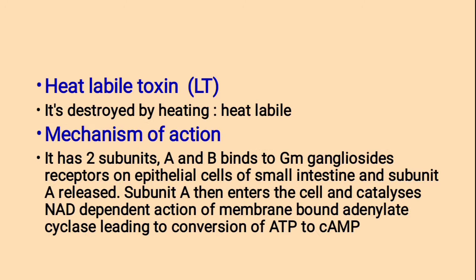Mechanism of action of heat-labile toxin: it has two subunits A and B. It binds to the GM1 ganglioside receptors on epithelial cells of the small intestine and subunit A is released. GM1 ganglioside receptors are present on cell surfaces with two hydrocarbon chains of ceramide moiety embedded in the plasma membrane. Subunit A then enters the cell and catalyzes NAD-dependent activation of membrane-bound adenylate cyclase, leading to conversion of ATP to cyclic AMP.